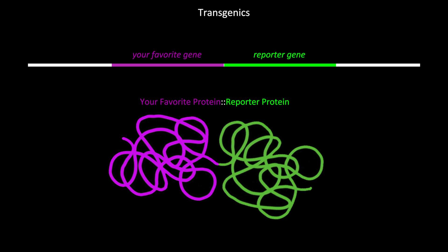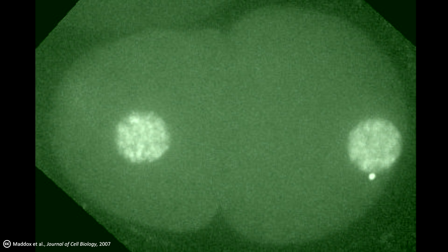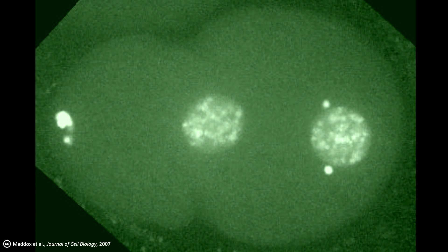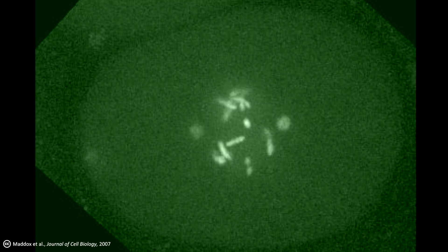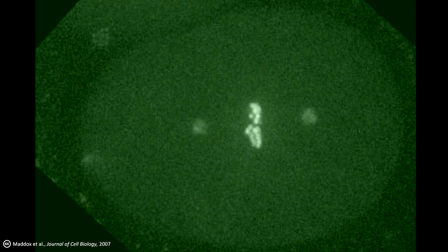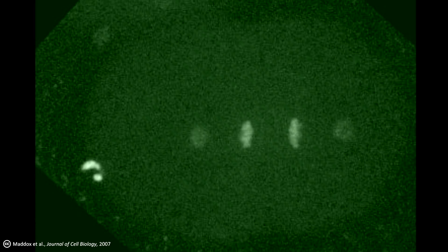You can sometimes get artifacts with transgenics. So you do have to be aware of that possibility. But the great thing about this approach is that in contrast to the other techniques that I've discussed, which require you to kill the embryo or animal you're analyzing, many transgenic techniques enable you to follow the expression of your gene of interest in live embryos or animals. For example, here's a C. elegans embryo expressing GFP-tagged versions of histone and tubulin proteins, which lets you follow the dynamics of the mitotic spindle during the first cell division.